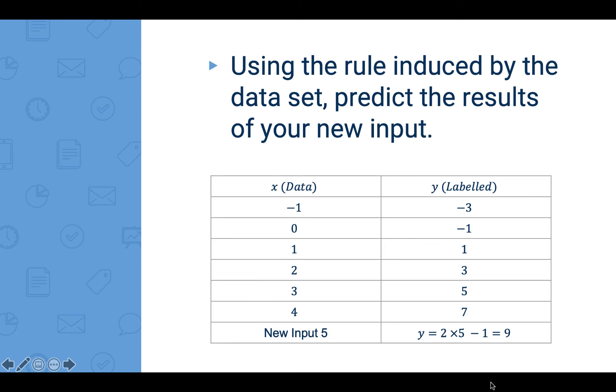So if we have an input x is equal to 5, then the computer will make prediction that y is 9 based on the rule y is equal to 2x minus 1.